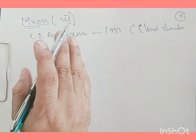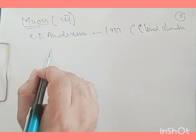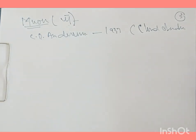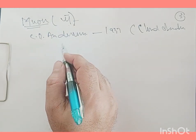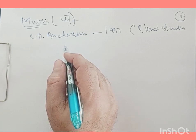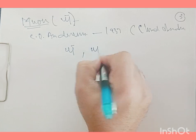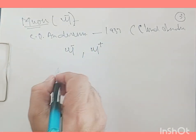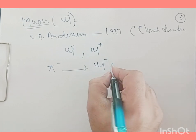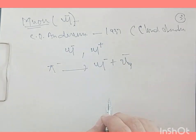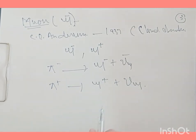The muon is an elementary particle with no substructure. It is similar to the electron in terms of charge and spin — it has the same charge and the same spin of 1/2 ħ — but it is heavier than the electron. The muon is a negatively charged particle; its anti-particle is the anti-muon (μ⁺). Muons are produced when pions decay: π⁻ → μ⁻ + ν̄_μ, and π⁺ → μ⁺ + ν_μ.